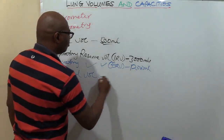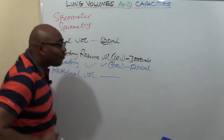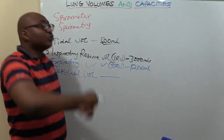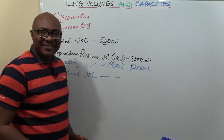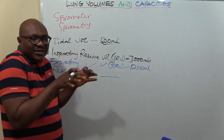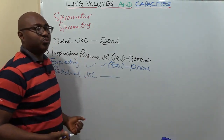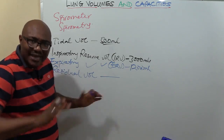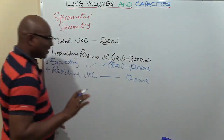Residual — think of what is remaining. After you have breathed out maximally, including the ERV, there is still some volume of air left in your lungs that you can never breathe out. The purpose is so that the alveoli do not collapse totally. Even after you force out all the air with your strength, some still remains. That is residual volume — also around 1,200 milliliters.